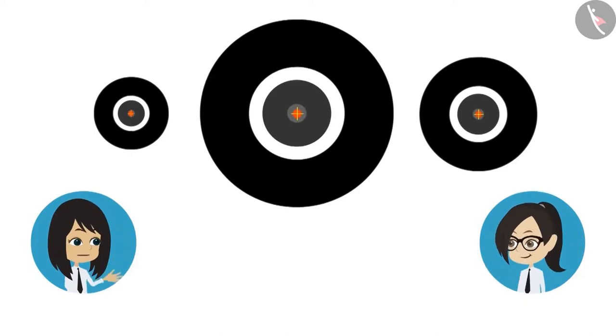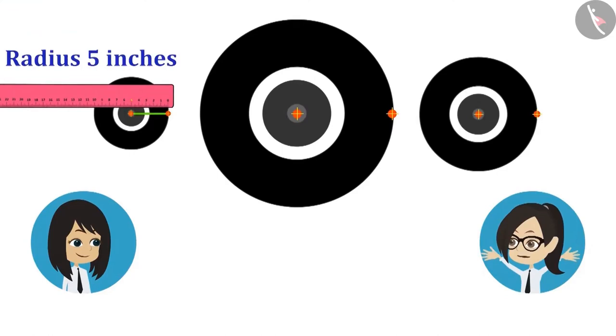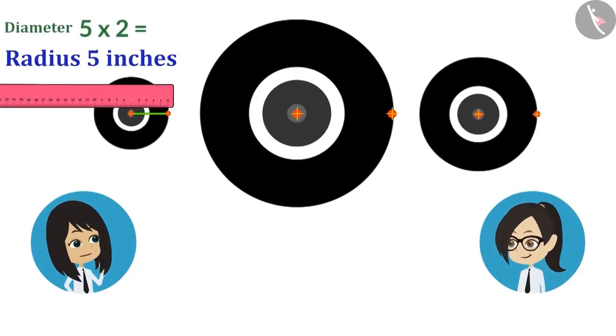Now measure the distance from the center to the point on the boundary. The radius of the wheel of the scooter is 5 inches. This means its diameter will be 5 inches multiplied by 2 meaning 10 inches.